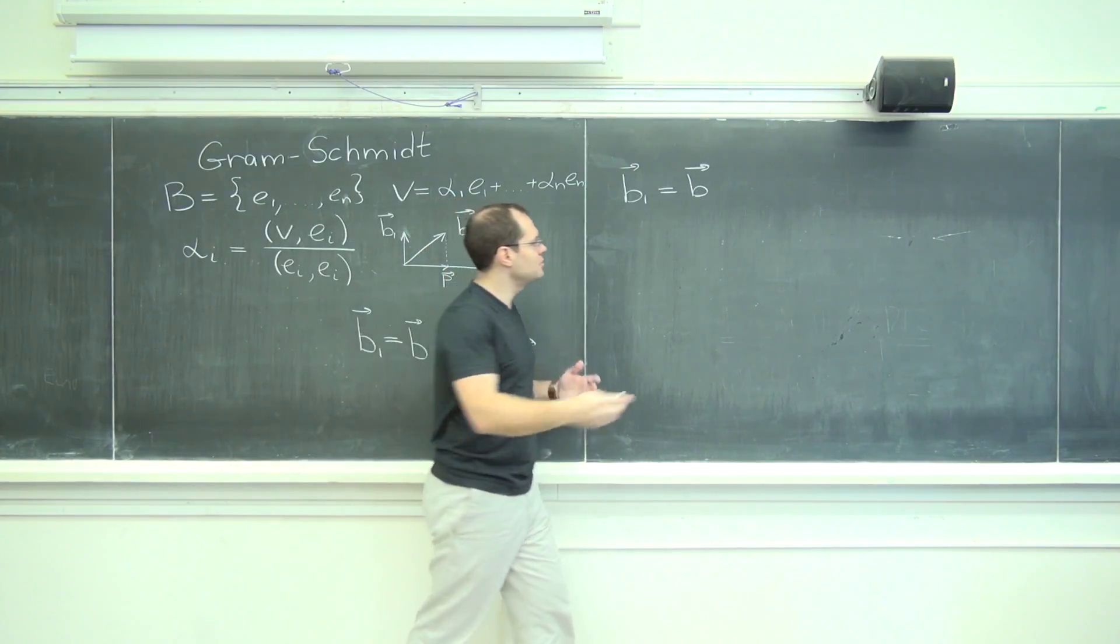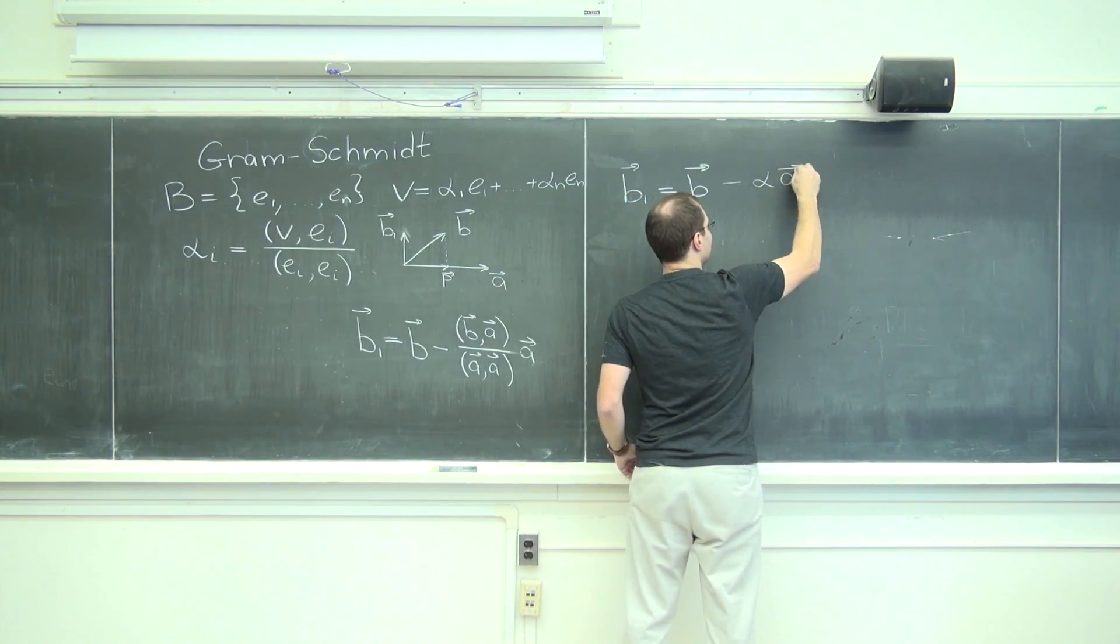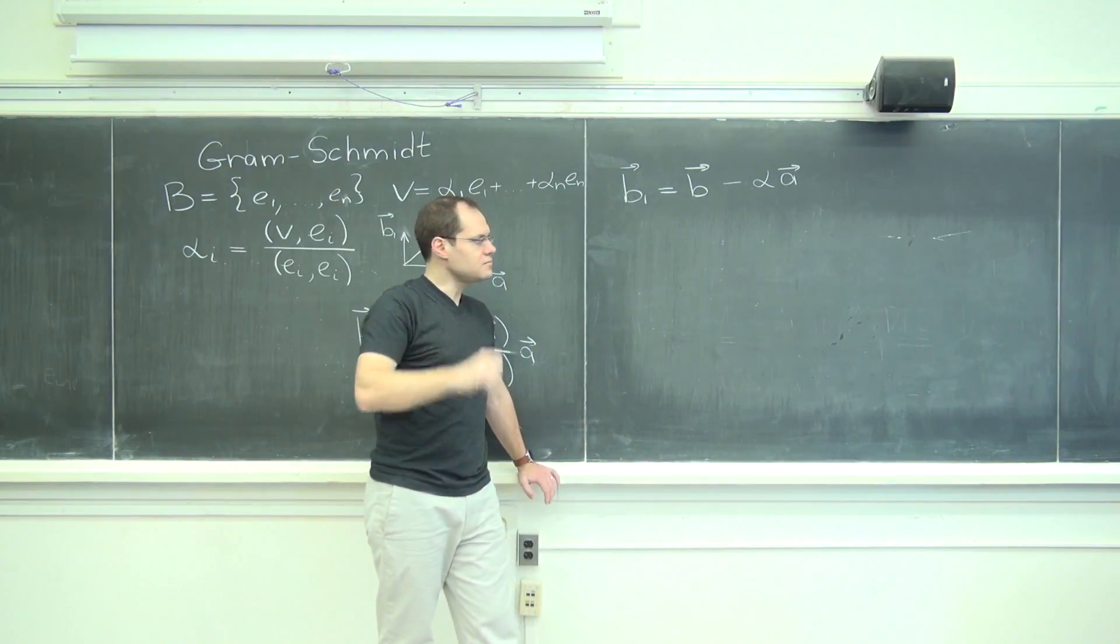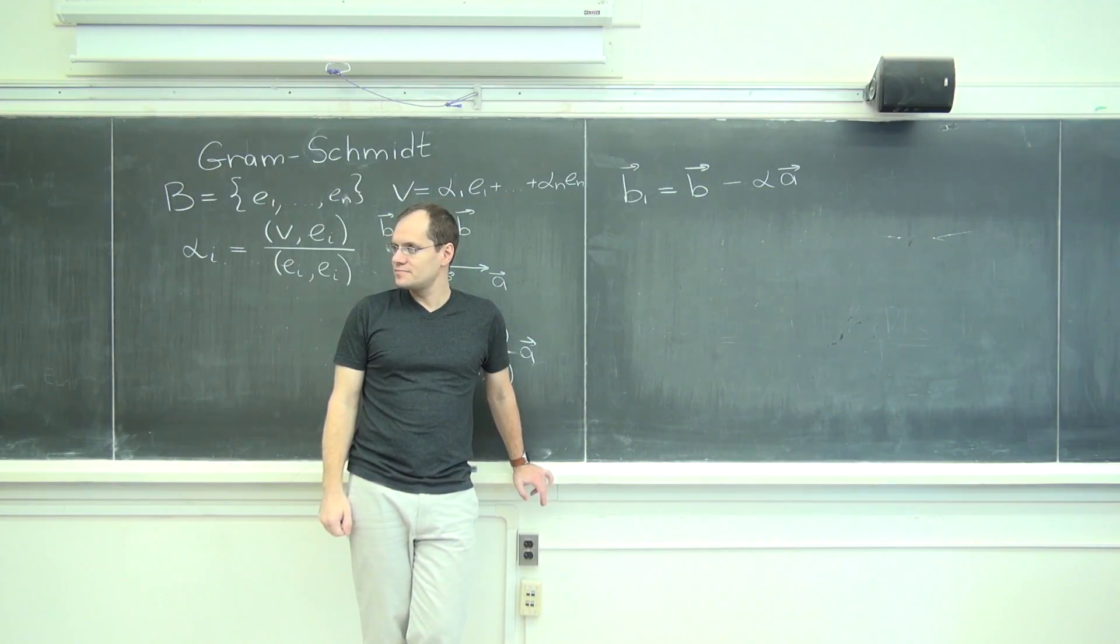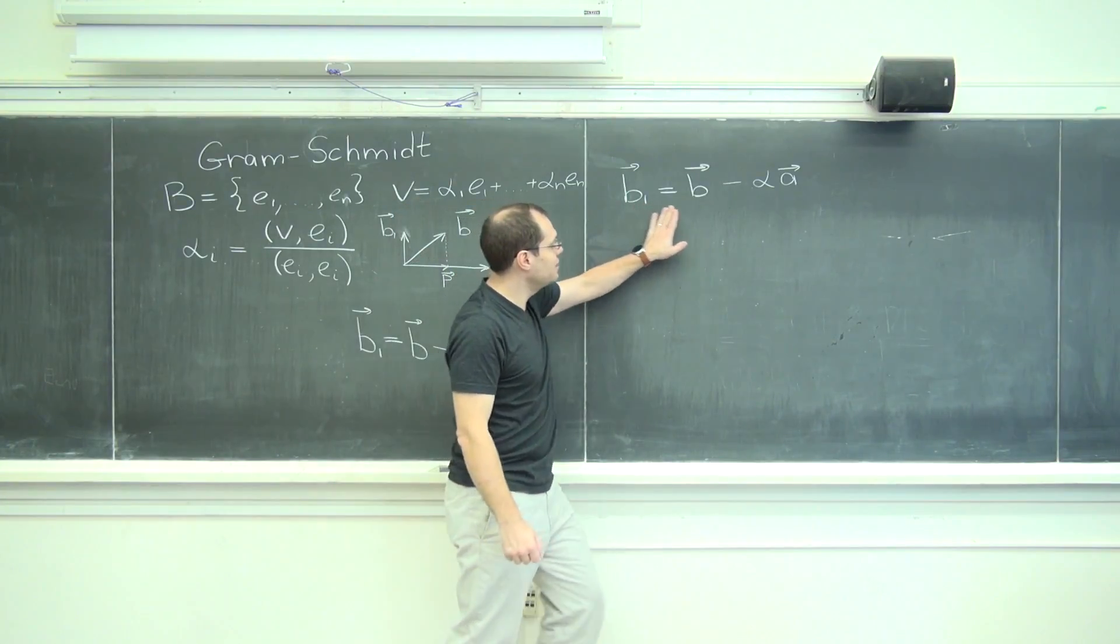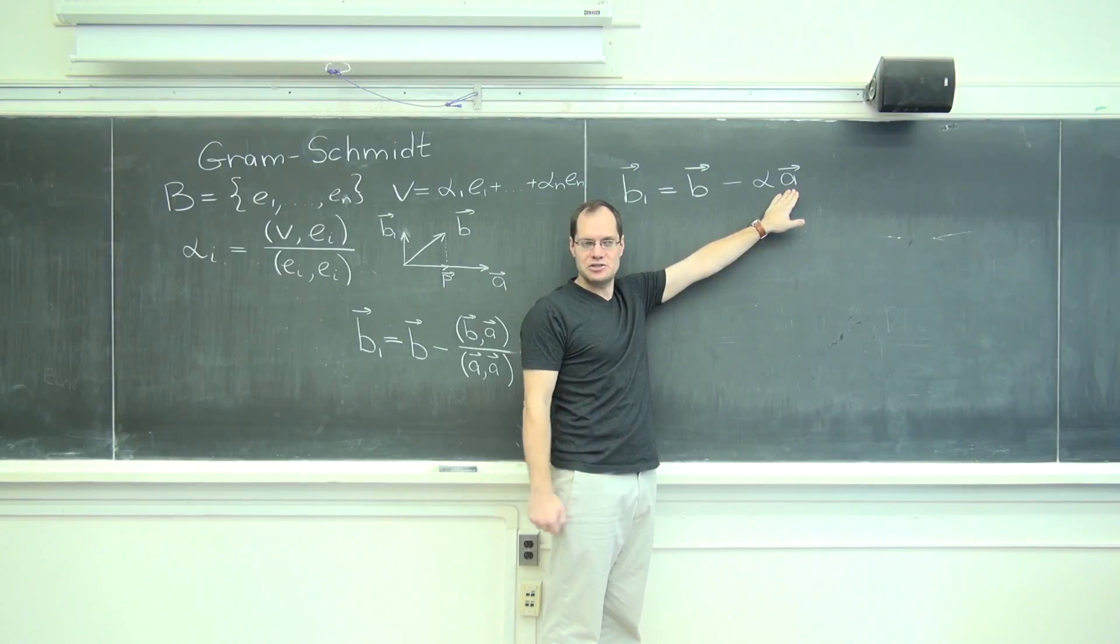The only question is what multiple. Well, we'll call it alpha. We don't know what multiple, we'll subtract alpha a from it. And what advantage do we want to gain? Well, we want this guy to be orthogonal to a, that's what we want. That's the advantage we're looking for.